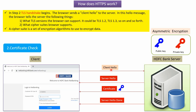In Step 2, the TLS handshake begins. The browser sends a Client Hello message to the server. In this hello message, the browser tells the server two things: first, what TLS version the browser can support — it could be TLS 1.2, TLS 1.3, and so on — and second, what cipher suites the browser can support. A cipher suite is a set of encryption algorithms used to encrypt the data.